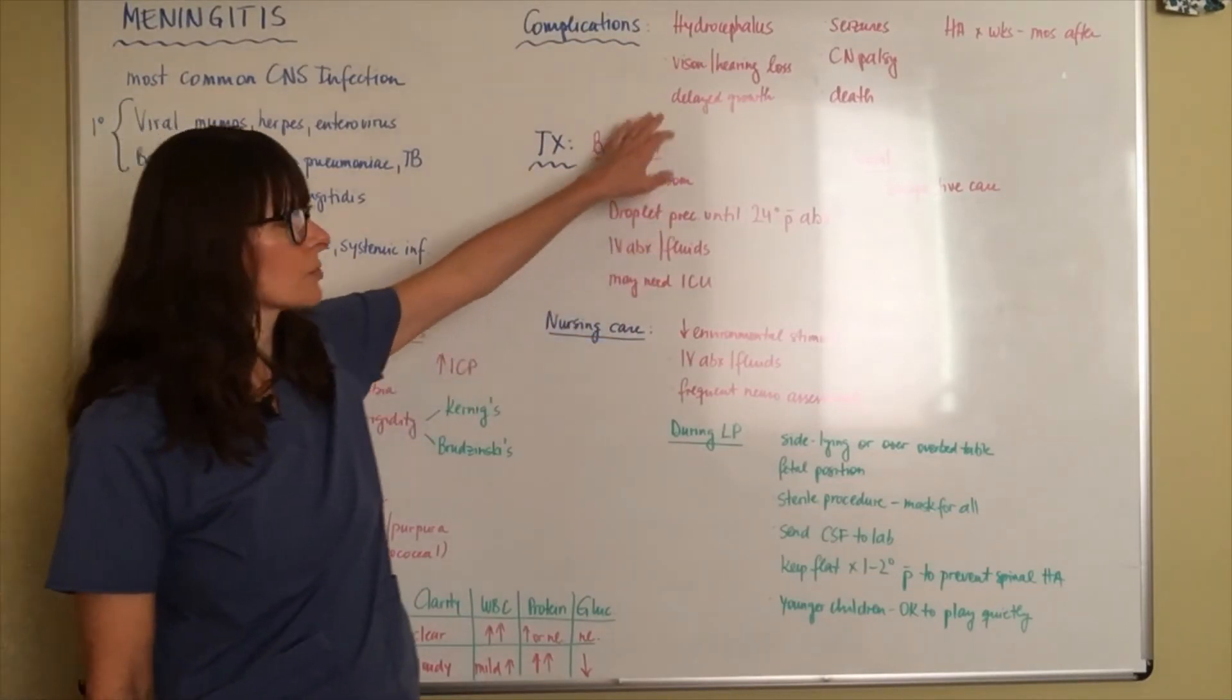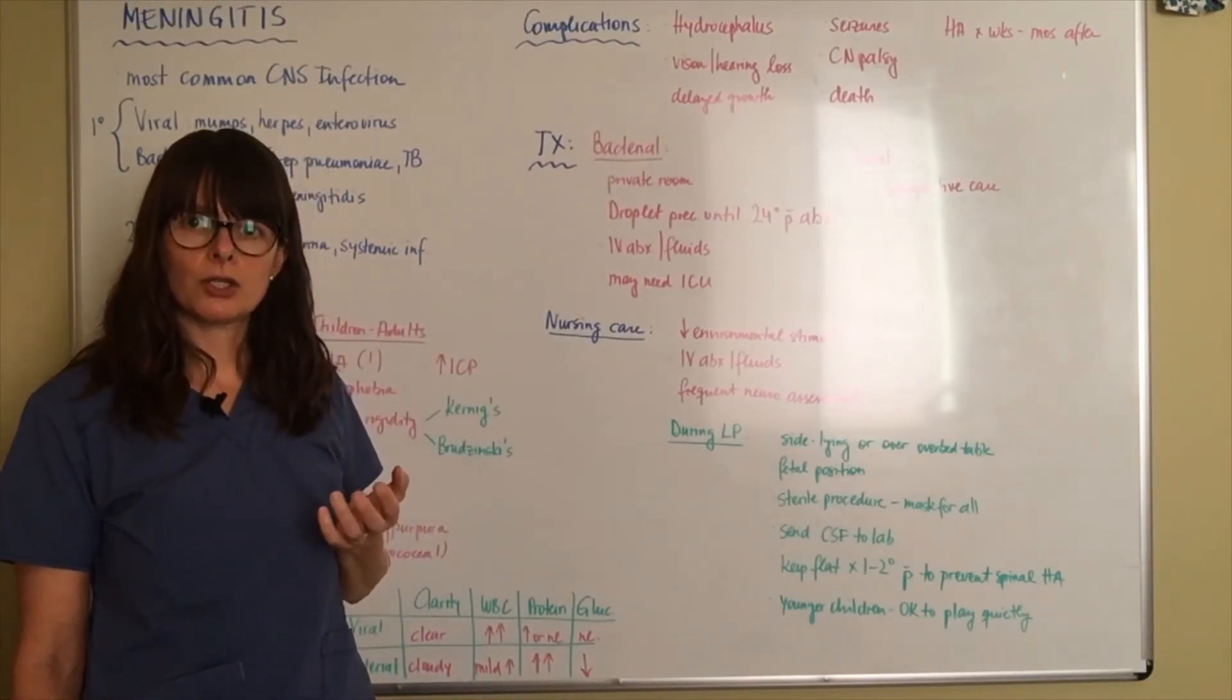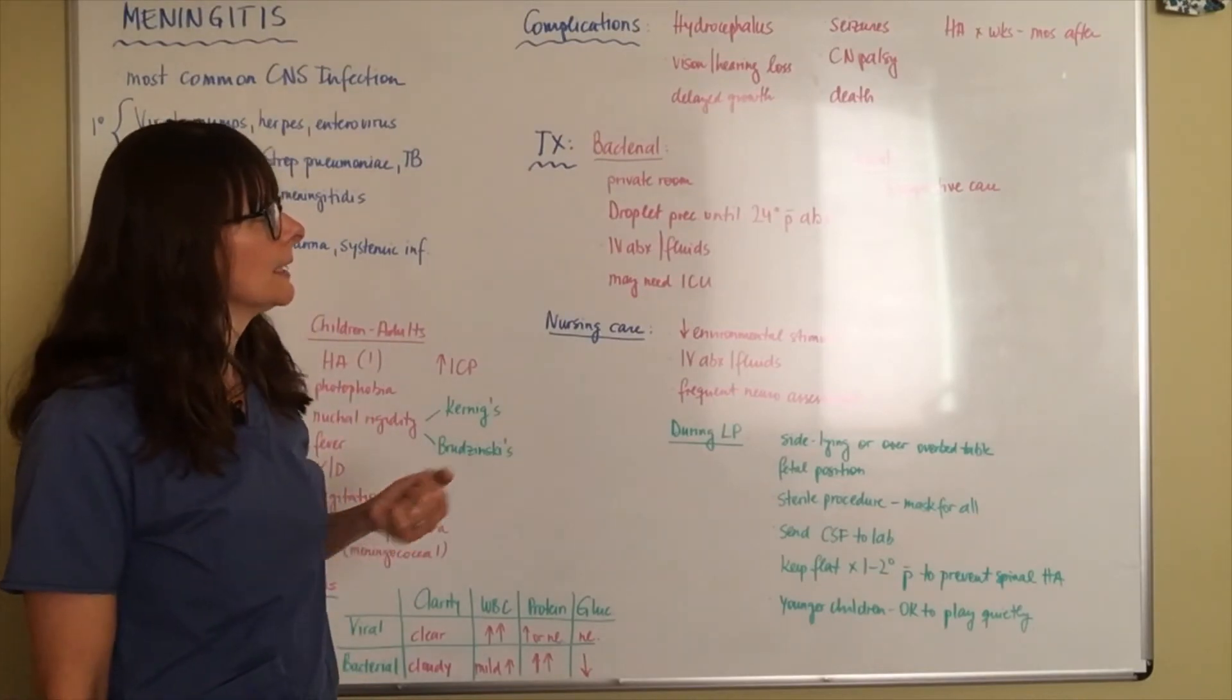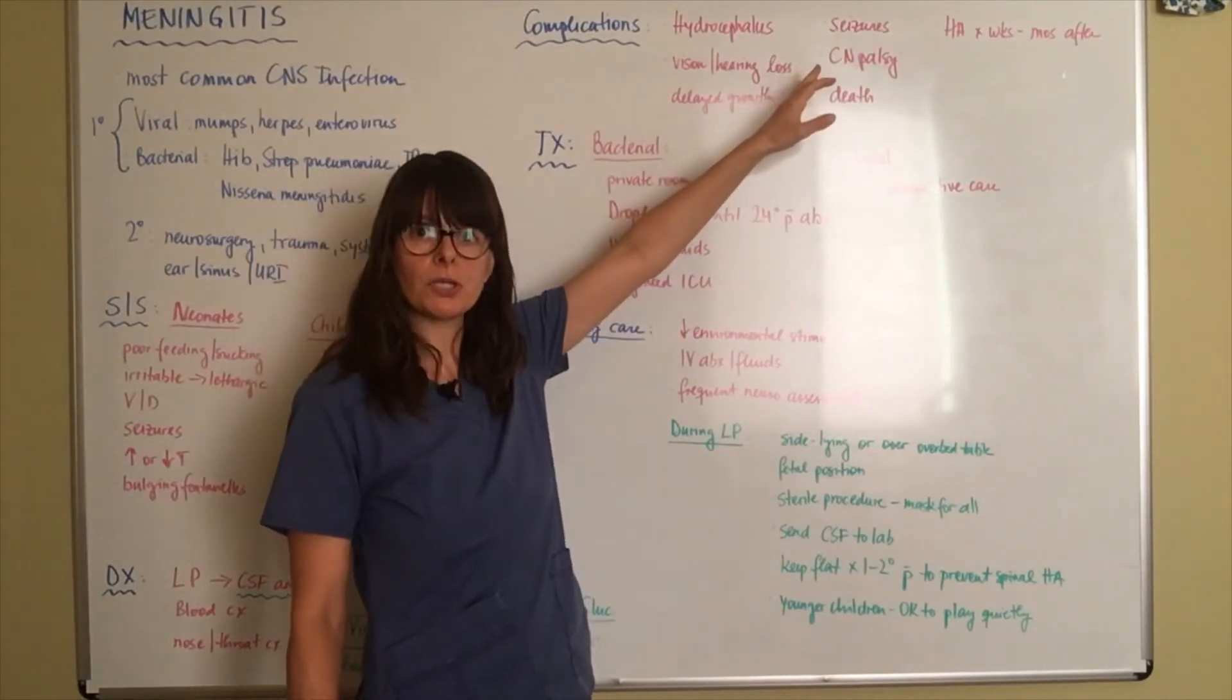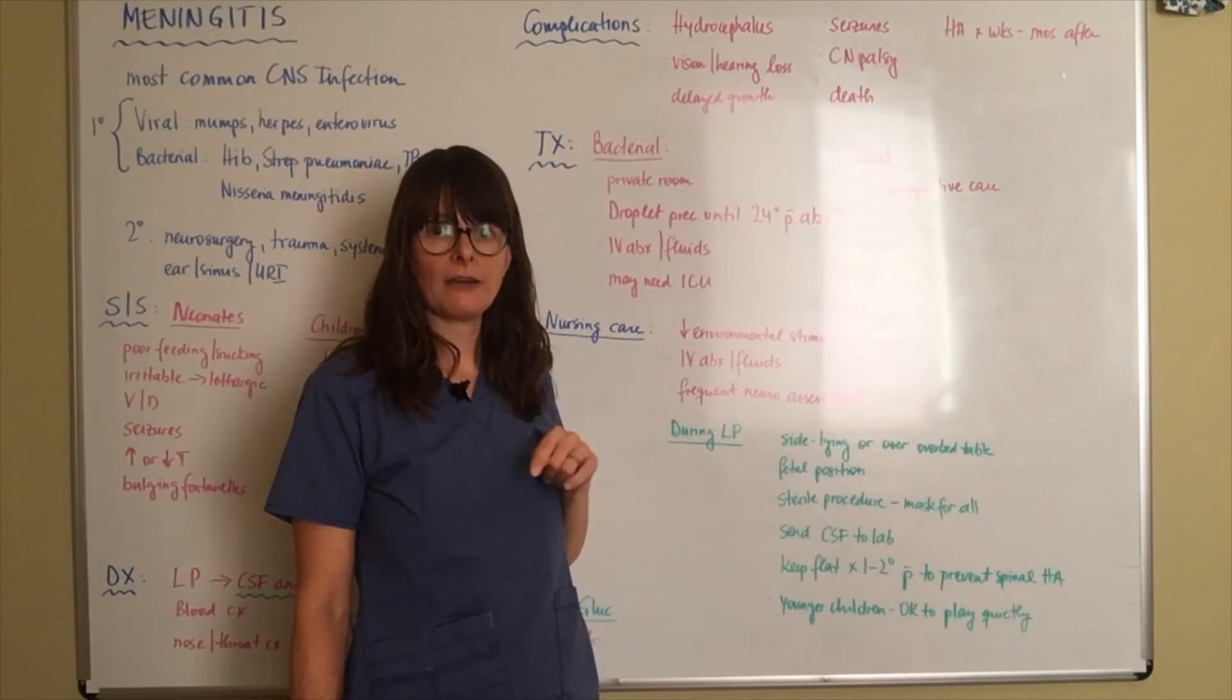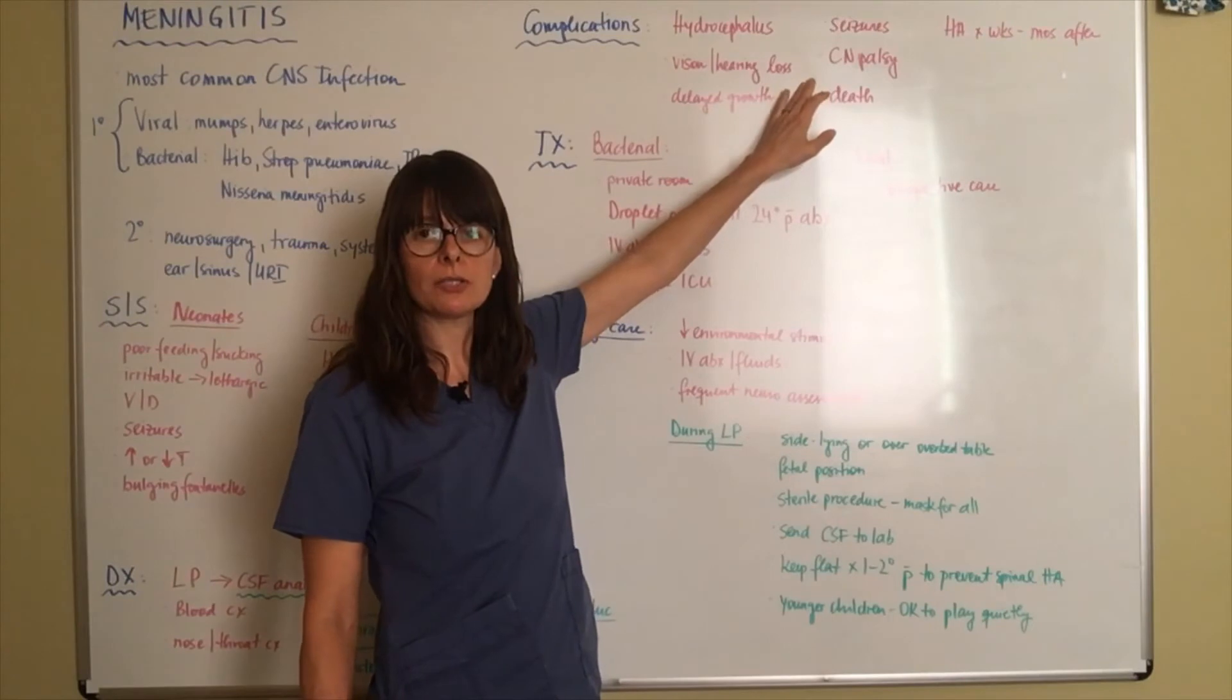As well as delayed growth. So now there's a central nervous system infection in a very small child, that can certainly lead to delayed growth and development because of the irritation of the meninges. Patient might be prone to seizures and that is during as well as after the infection is over.